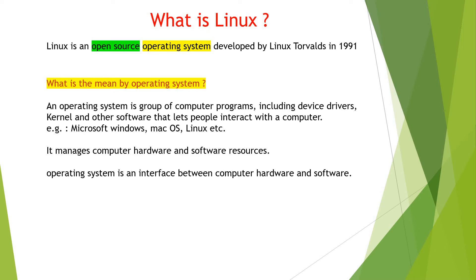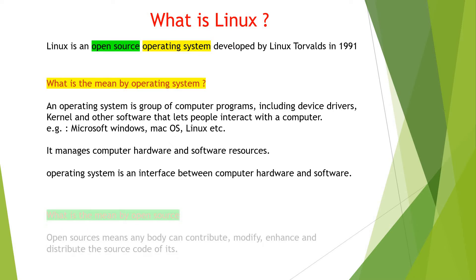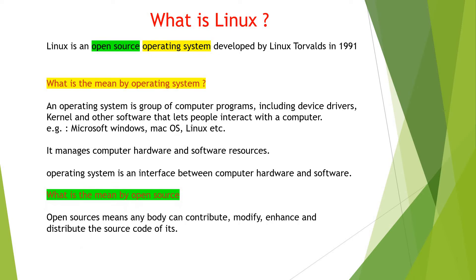An operating system is an interface between computer hardware and software. Now what is the meaning of open source? Open source means anybody can contribute, modify, enhance and distribute the source code of any software. So an operating system that can be contributed to, modified, enhanced and distributed is an open source operating system.